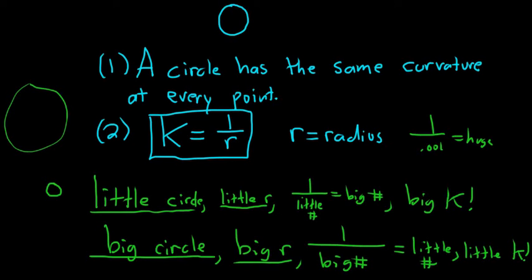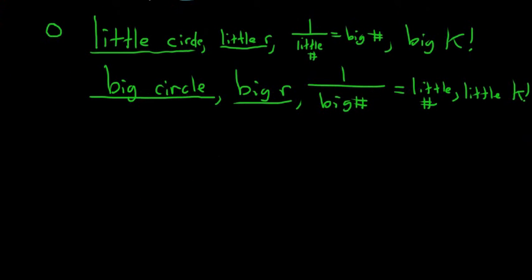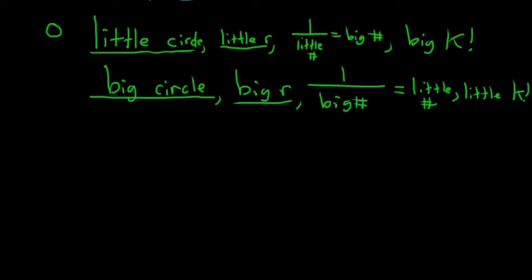So the formula does make sense intuitively. When R is small, smaller circles will give you a bigger curvature. Let's do an example just so you see how this works. And bigger circles will give you a smaller curvature.